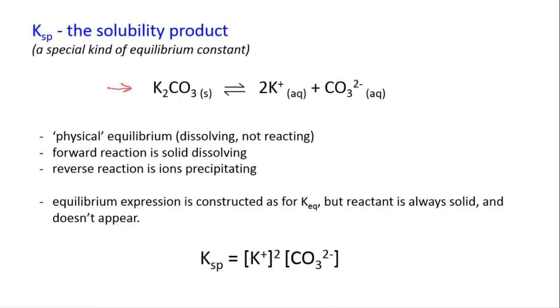Here's an example: we've got potassium carbonate and we've put some of that into water. The forward reaction in this equilibrium is that the solid is dissolving into aqueous ions which are free in solution. So the forward reaction is dissolving.